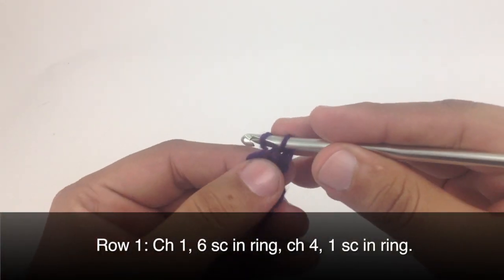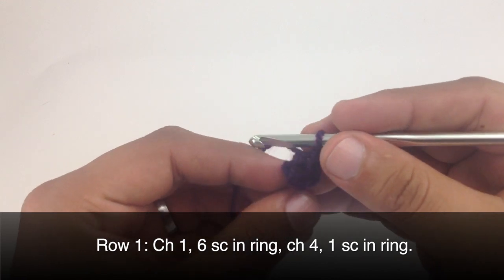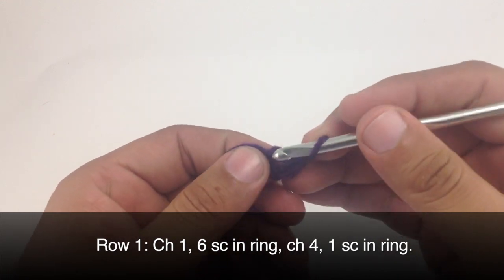Row 1. We're going to begin by chaining 1. Then we're going to do 6 single crochets into our ring.